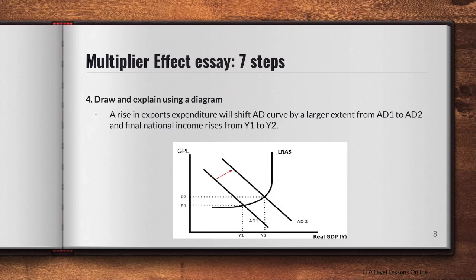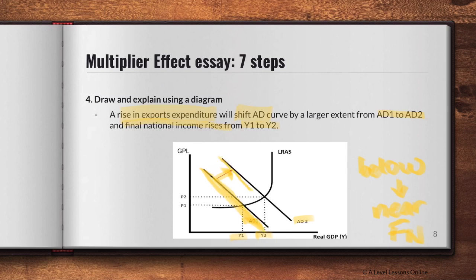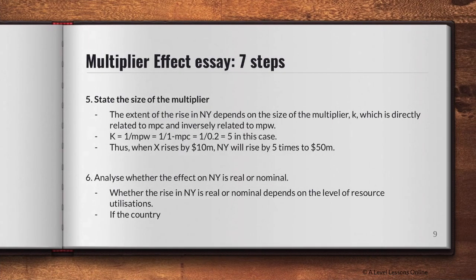Step four is to draw the AD diagram. A rise in exports will shift AD rightward — from AD1 to AD2 — by a larger extent due to the multiplier, and final national income rises from Y1 to Y2. Remember that this shift is always drawn below or near full employment. Try not to draw it all the way up to full employment, because that is where inflation can occur.